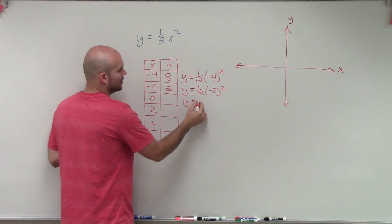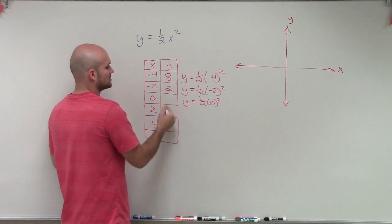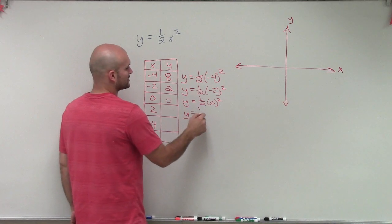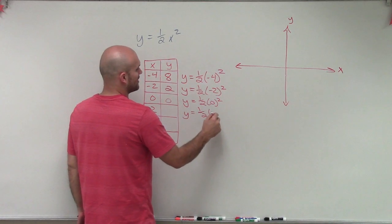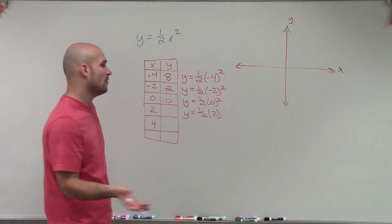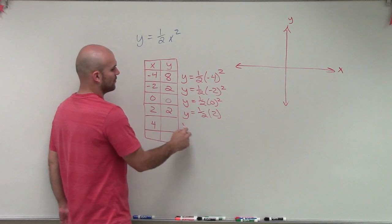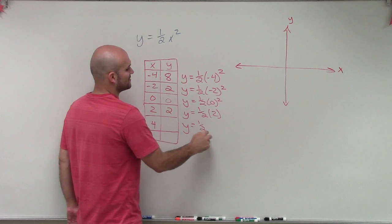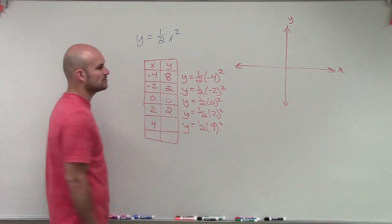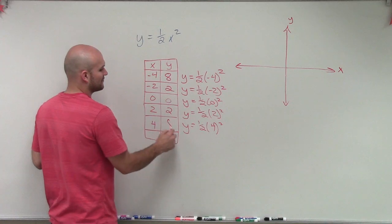Then I plug in 0. 0 squared is 0. 0 times 1 half is 0. Then we notice that 2, we're going to plug in 2. And what we notice is since we're squaring it, it doesn't matter if 2 is negative or positive. We're still going to get back 4. When 4 times 1 half, again, will give us 2. And that's going to be the same case with 4. When I plug in a positive 4, it's not going to change my output value, because 4 squared is 16 and negative 4 squared is 16. Multiply by 1 half, we're going to give us 8.